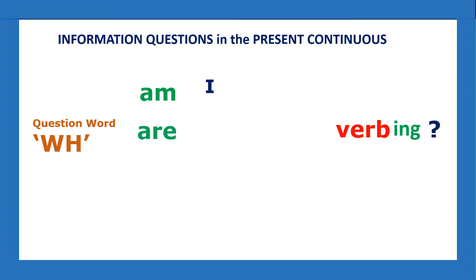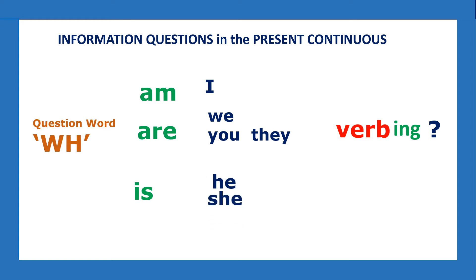Then we have the verb 'to be' — 'are.' When do we use 'are'? Are we, are you, are they. Examples: What are we doing? What are you doing? What are they doing? And when do we use 'is'? Is he, is she, is it. Examples: What is he doing? What is she doing? What is it doing?